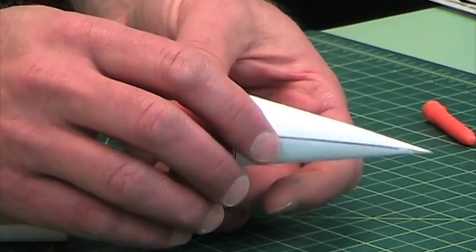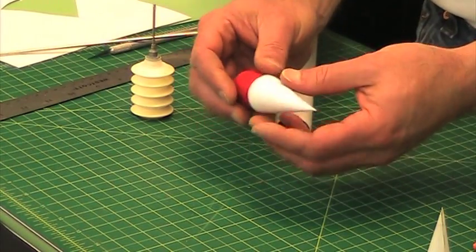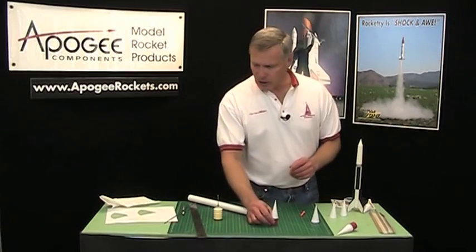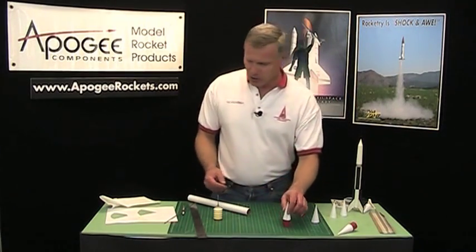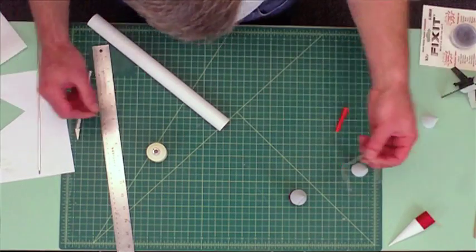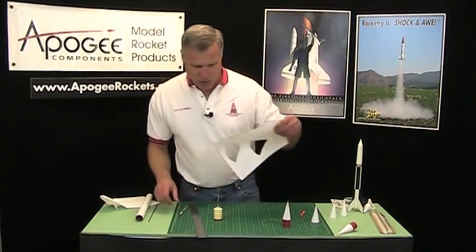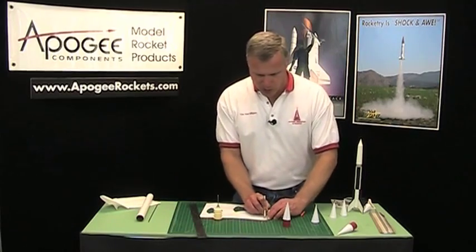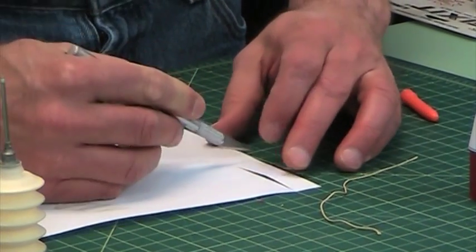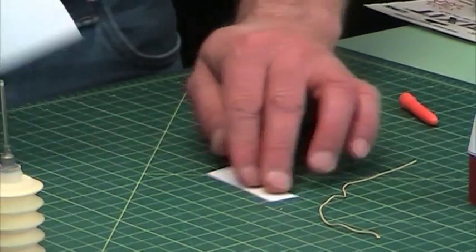Alright. So now, we're almost done. We just need a shock cord attachment. And for that, I have a little piece of Kevlar. I'm going to take some scrap paper and I'm going to basically do an Estes engine shock cord mount style. I'll just cut a little rectangle.